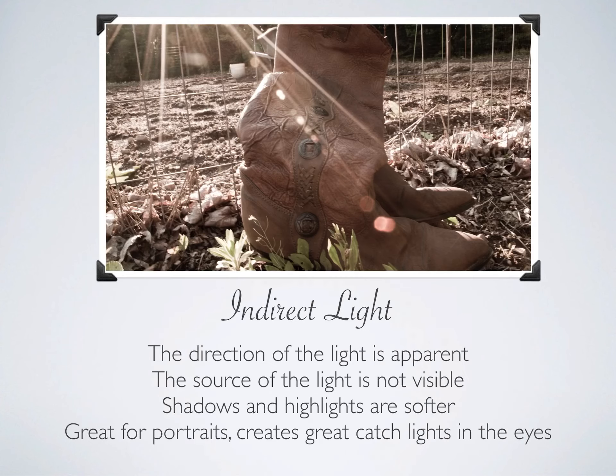Indirect light. The direction of the light is apparent, but the source of the light is not visible. Shadows and highlights are a bit softer than with direct light. This is a great light for portraits and creates great catch lights in the eyes. With indirect light, you can tell where the light's coming from, but you can't exactly see the source. You can tell it's coming from one direction, and it's a little less direct and harsh than direct light.